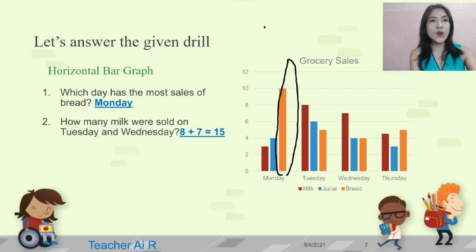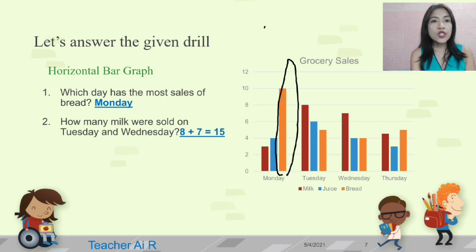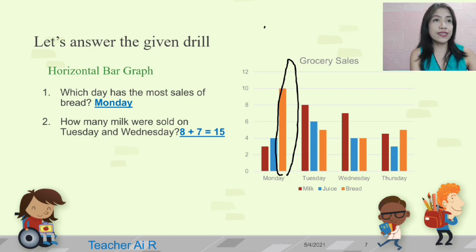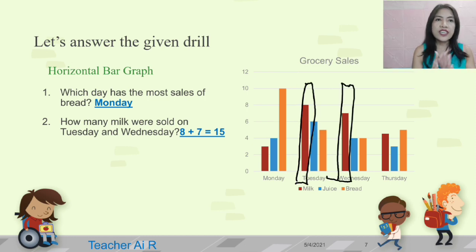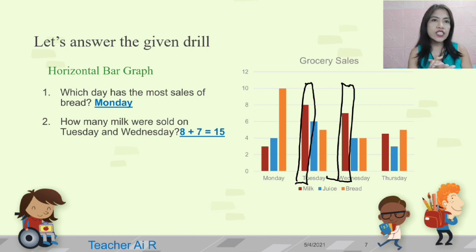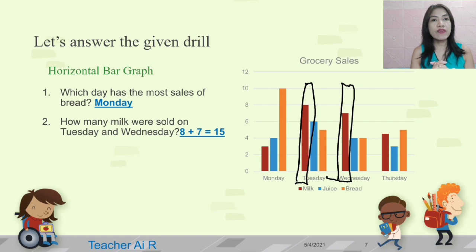For the next question: how many milks were sold on Tuesday and Wednesday? We have to get the milk, which is in maroon, on Tuesdays and Wednesdays. Tuesday is eight and Wednesday is seven. Eight plus seven is 15. Therefore, there are 15 milks sold on Tuesday and Wednesday.